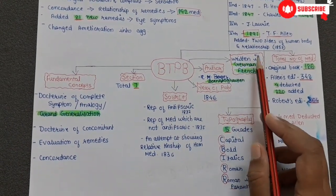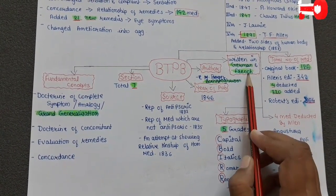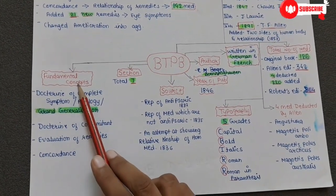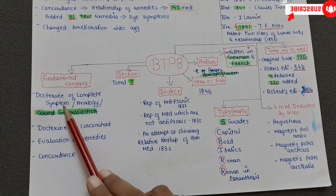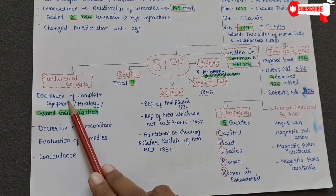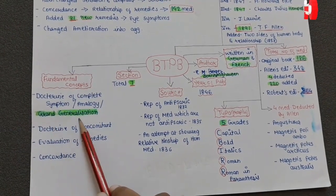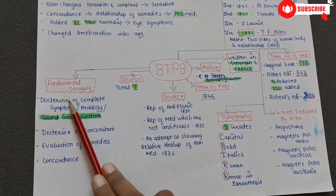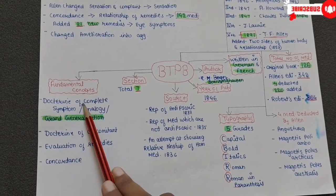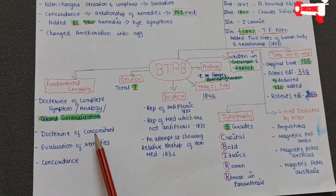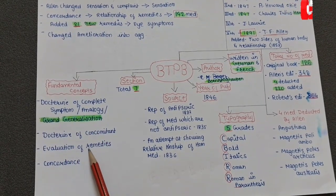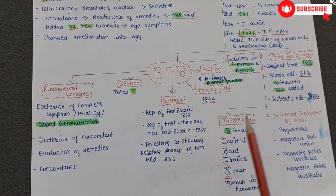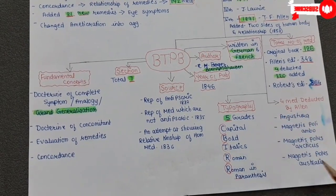The book is written in German and French languages. There are a total of seven sections in this repertory. The fundamental concept is that it is based on the Doctrine of Complete Symptom, the Doctrine of Analogy, or Grand Generalization — all three terms refer to the same concept. Another fundamental concept is the Doctrine of Concomitant, then Evaluation of Remedies, and Concordance.